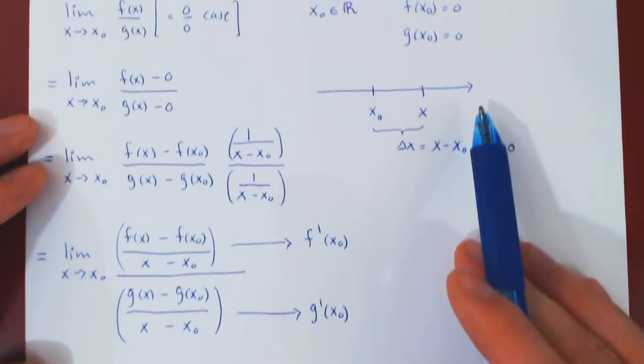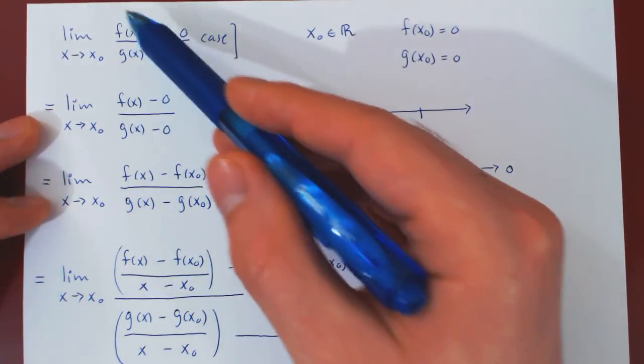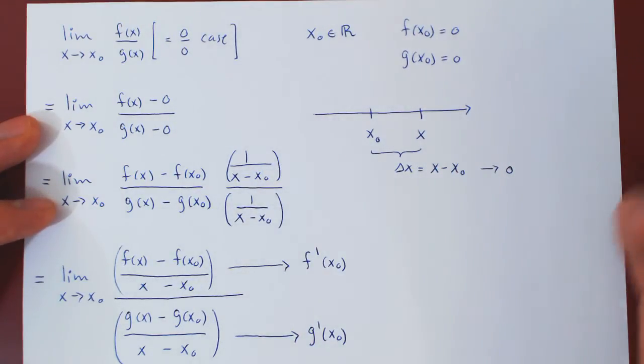If we work our way back up, we get the original limit. And that is the heuristic argument.